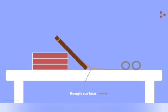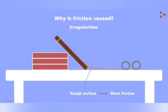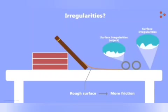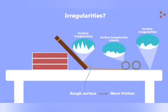Why is friction caused? It is caused due to irregularities on the two surfaces in contact. Even a surface that looks smooth has irregularities when zoomed in. The surface of the object also has minor irregularities. These irregularities on the two surfaces lock into one another, so to move an object we need to overcome them. Rougher surfaces have more irregularities, so more force is required to overcome them, resulting in higher friction.